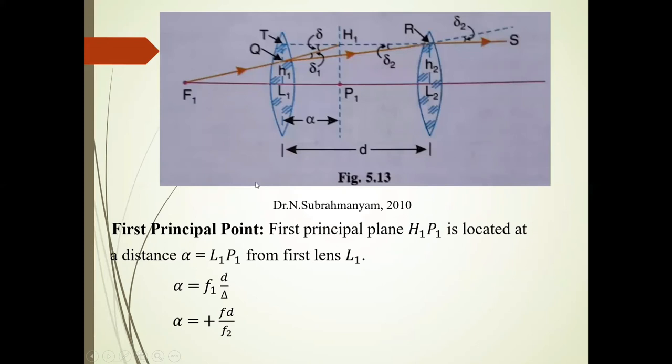This consider the second diagram. Here H1P1 is first principal plane and distance of this first principal plane H1P1 from lens L1 is alpha. So alpha is equal to F1 into D upon delta. So alpha is plus D upon F2.